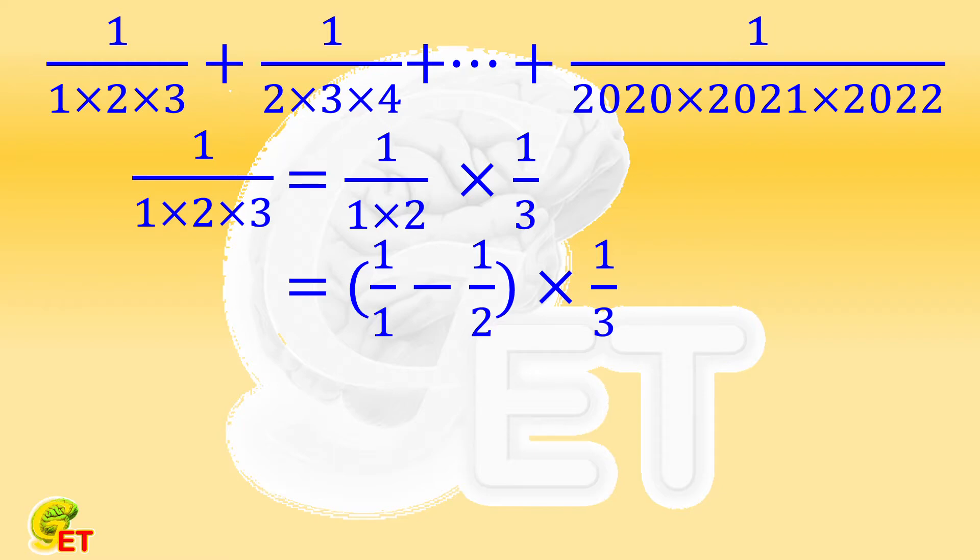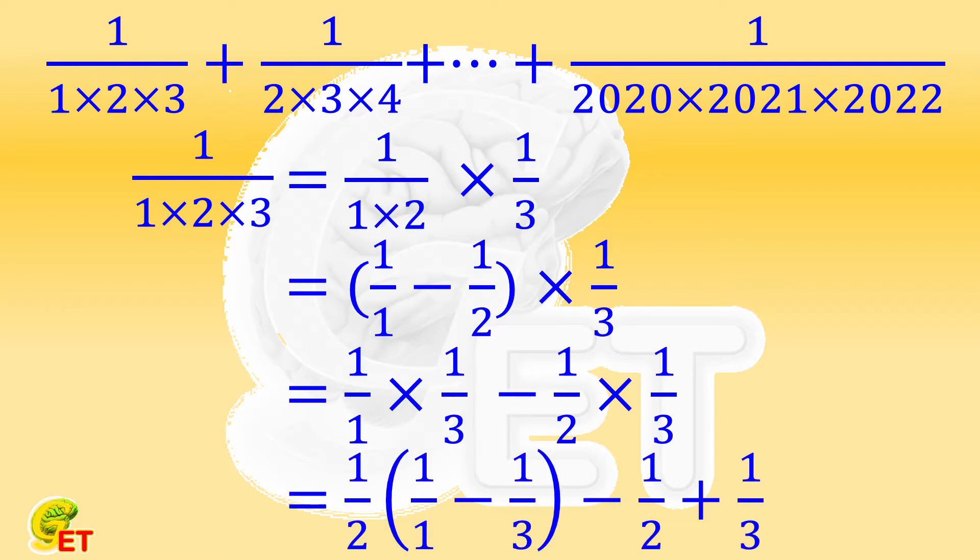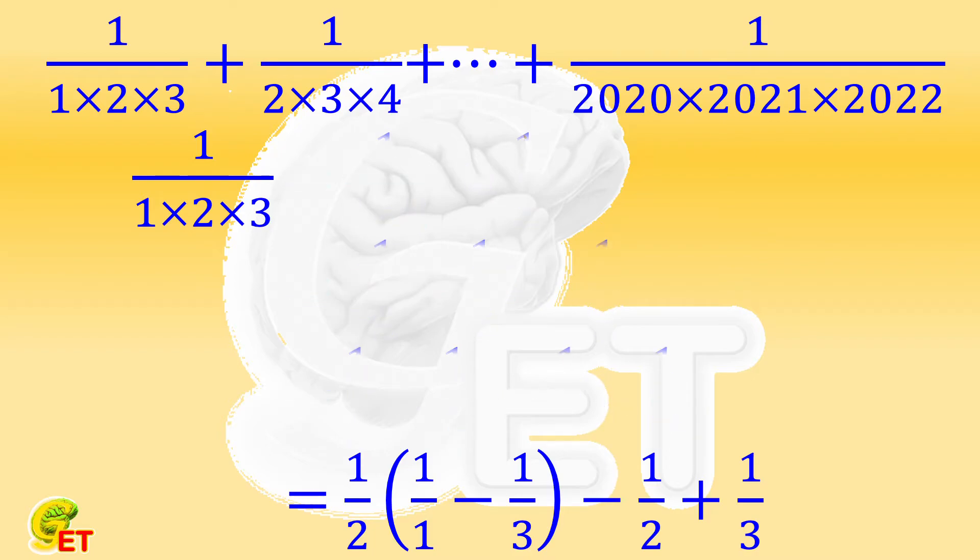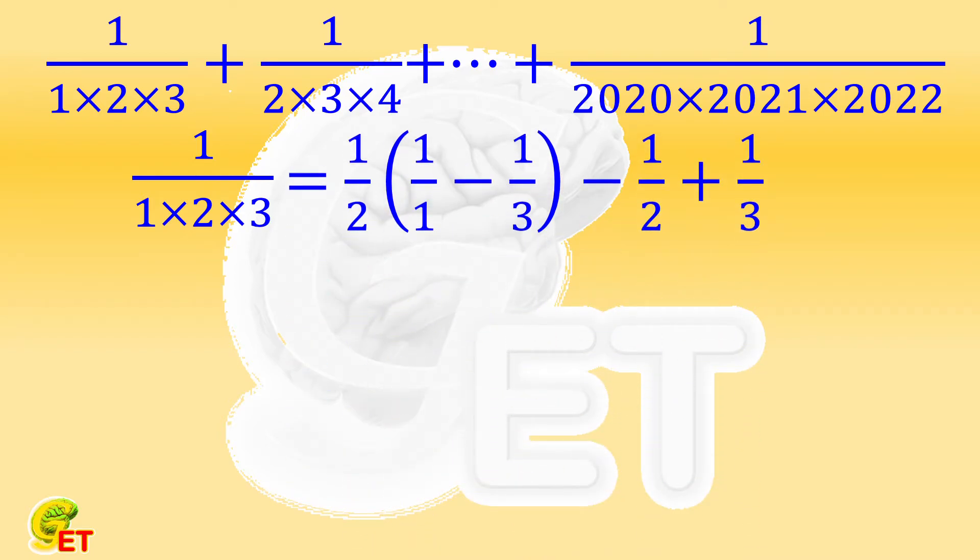It equals to 1 over 1 multiplies 1 over 3, minus 1 over 2 multiplies 1 over 3. And it equals to half of the difference between 1 over 1 and 1 over 3, minus 1 over 2, and plus 1 over 3. Please pay attention to this equation. It is exactly what we are going to use to deal with the current arithmetic.